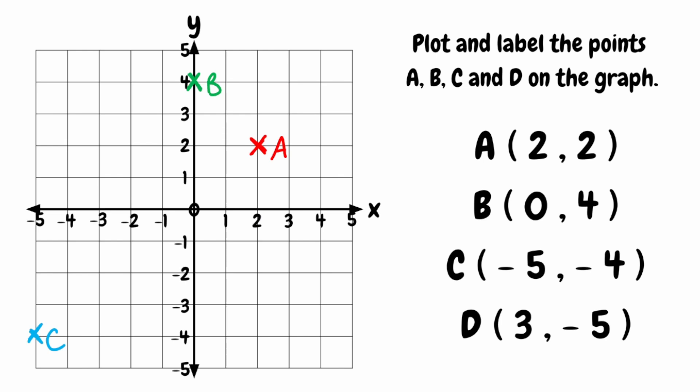Finally, we've got point D with coordinates 3, negative 5. The x-coordinate is 3, so that would be here on the x-axis. And then the y-coordinate is negative 5, so we need to come down to where this is in line with negative 5 on the y-axis. And that would be our point D. Well done if you followed along with all those questions, and that's it for this video.